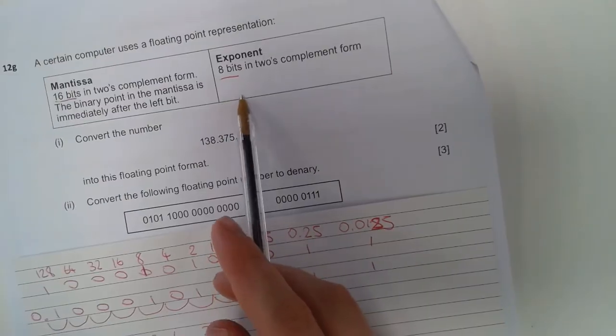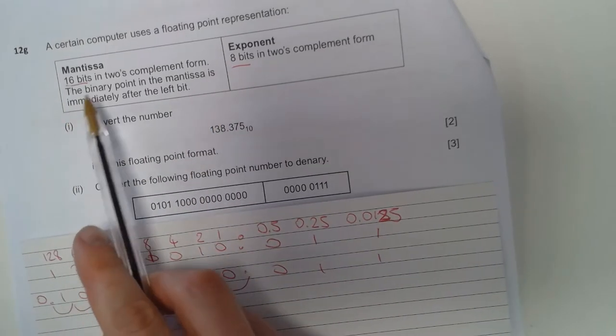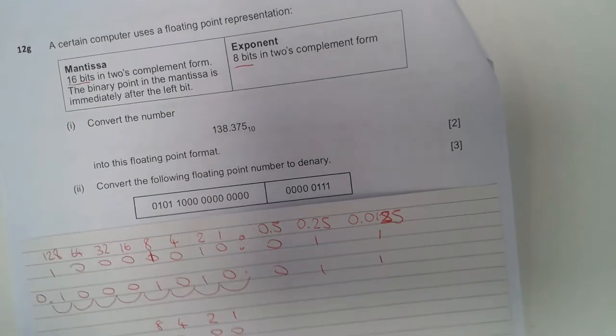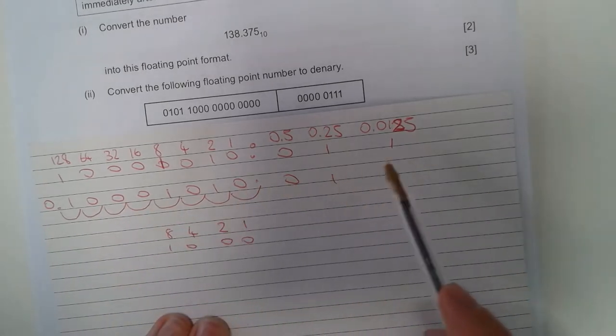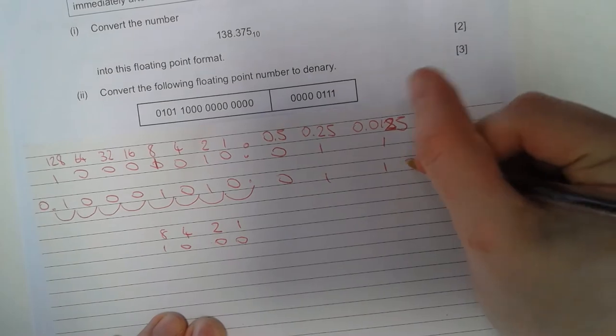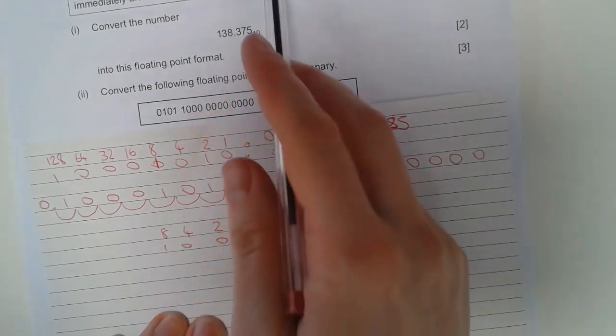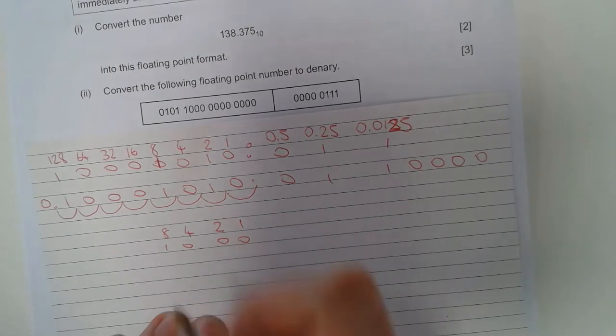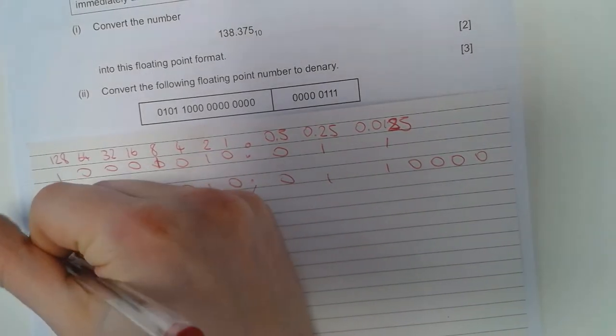But it's asking us to show it in 8 bits, and this mantissa in 16 bits. So if we check here, we've got 1, 2, 3, 4, 5, 6, 7, 8, 9, 10, 11, 12, 13, 14, 15, 16. And then for our exponent, 1, 2, 3, 4, 5, 6, 7, 8.